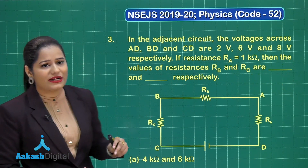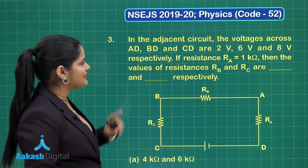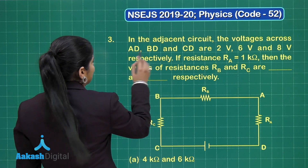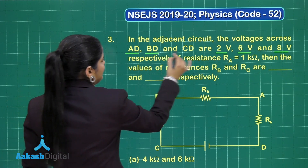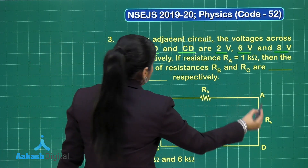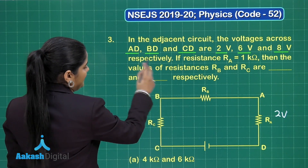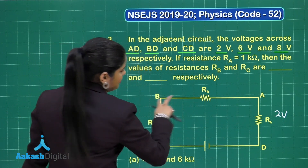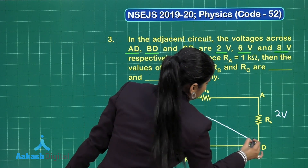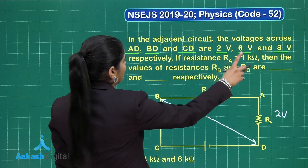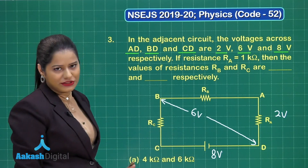Question number 3 says: in the adjacent circuit, the voltages across AD, BD, and CD are 2 V, 6 V, and 8 V respectively. So the voltage across AD is 2 V, across BD (meaning the sum of voltages across RA and RB) is 6 V, and across CD is 8 V — which means the cell is providing 8 V to the circuit. We need to find the values of RB and RC.